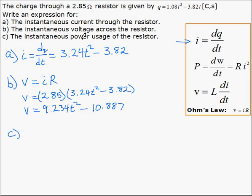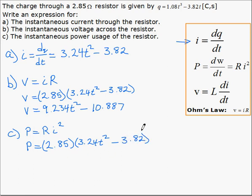Finally, we're asked to find the power usage of the resistor. Power is the derivative of work with respect to time. We don't know anything about the work here, but that also simplifies to the resistance multiplied by the current squared. We know the resistance, we found the current in step 1. So we can say power equals the resistance times I squared. Power is equal to 2.85 multiplied by 3.24T squared minus 3.82, all squared.